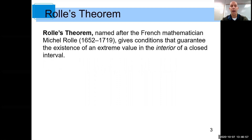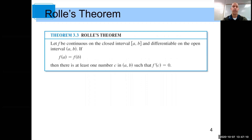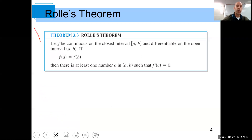Michael Rolle was a French mathematician, and he has been given credit for this theorem — Rolle's Theorem — and it guarantees the existence of an extreme value in the interior of a closed interval. This is an important theorem. It's not the most important theorem of the two, but it is an important one, and I'll tell you why.